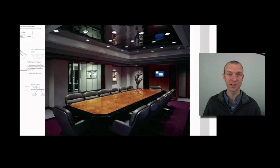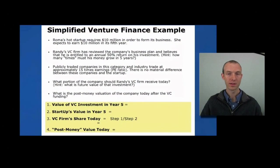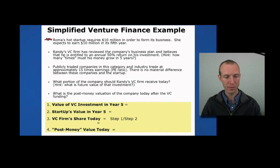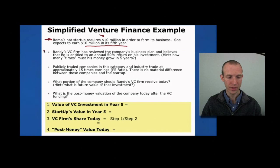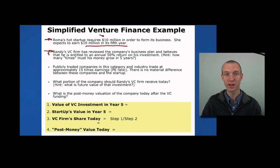Let's start with some simple examples. Imagine here we have Roma's hot startup, and Roma has determined that she needs $10 million in order to form her business. She expects from her business plan to earn about $10 million in the fifth year — at least that's what she's pitching in her presentation. Randy has a VC firm and he's listening to Roma's pitch. He's reviewed the company's business plan and he believes he is entitled to an annual 50% return on his investment, or that's at least what his institutional investors are expecting him to return in their fund.